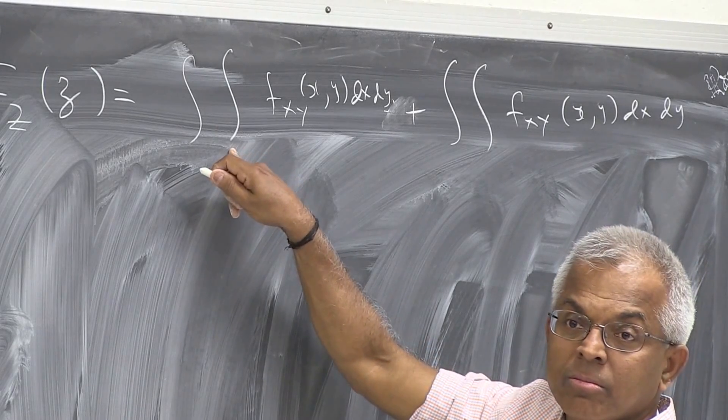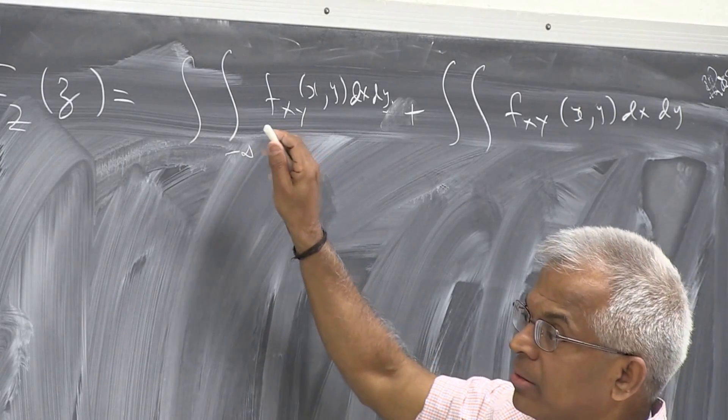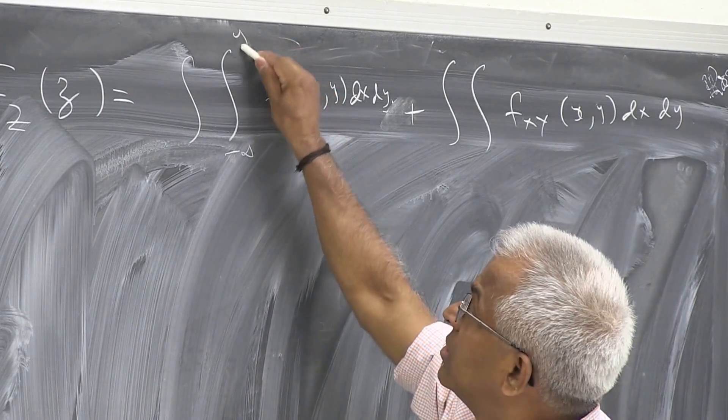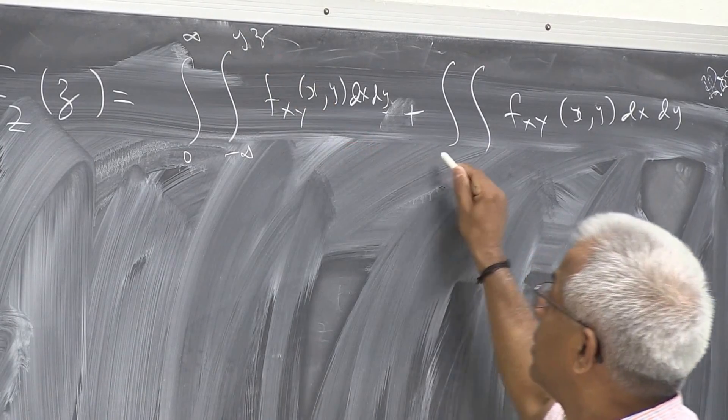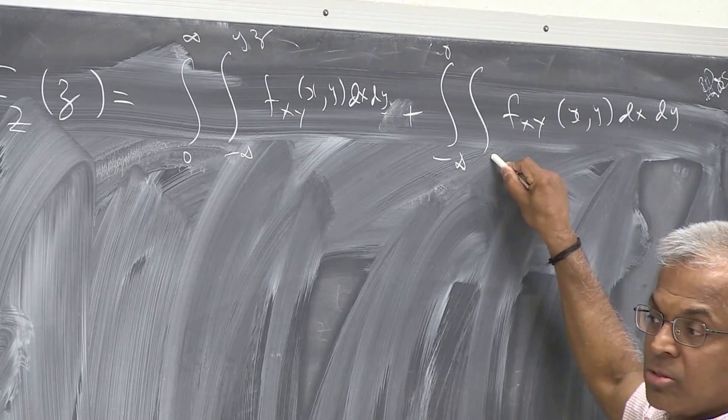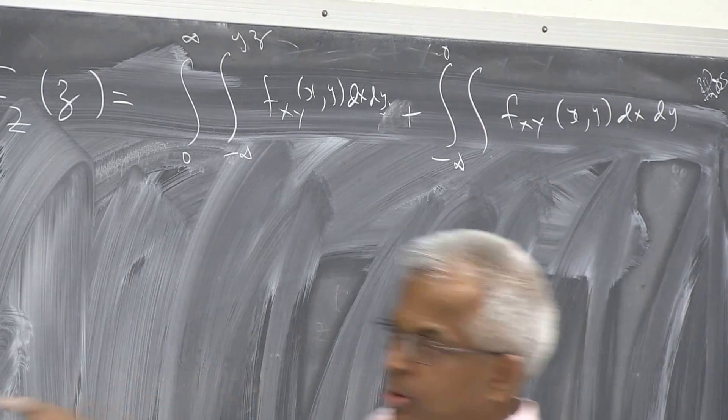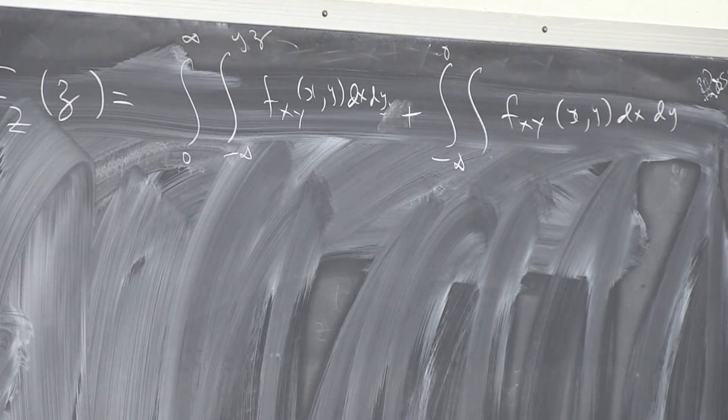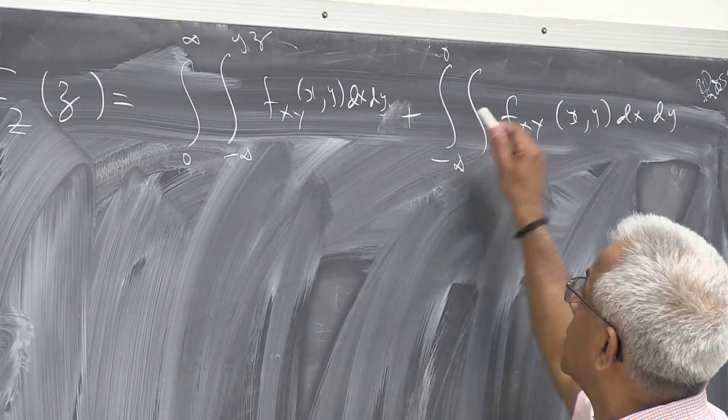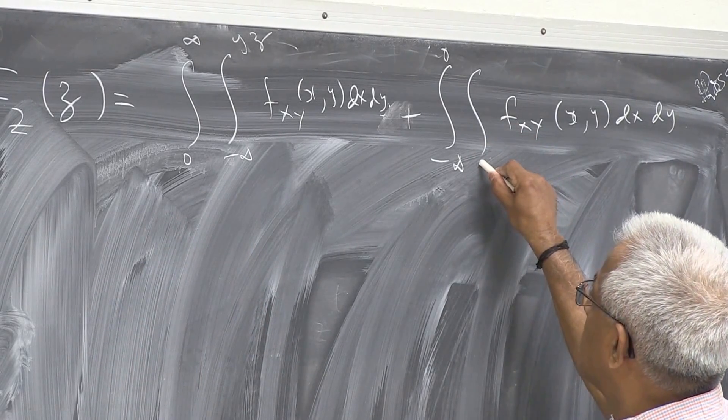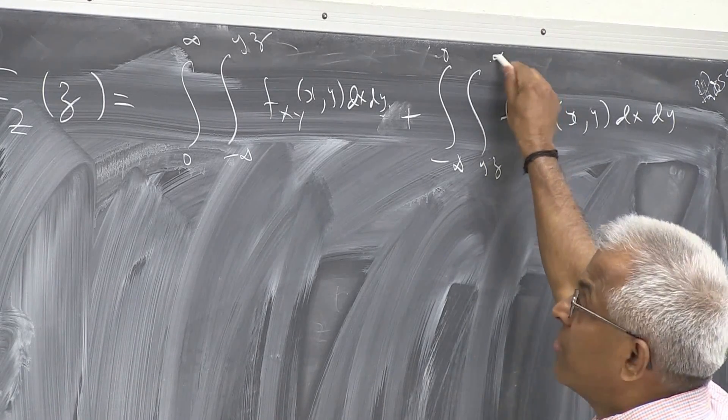So I am going to write this as two integrals. So the fxy(x, y), first integrate on x, integrate on x, then y. So here we go. x goes from? Hello? Minus infinity to where? Yz. And y goes from? 0 to infinity. Here y goes from minus infinity to 0 and x goes from? No, look at the line. What is this line? Yz. So it goes from minus yz would be a line this way. So what is it now? Yz to infinity.